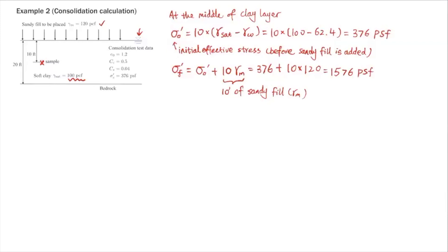To determine the primary consolidation settlement SC, we need to know which case it is. That's where you compare these values to your pre-consolidation pressure. Pre-consolidation pressure SC is 376 PSF. If you compare with these values, you notice that initially the effective stress in the clay layer is the same as its pre-consolidation pressure, which means this is a normally consolidated clay. If you look at the three cases, this is case 1 in our notes. For normally consolidated clay, we're going to use the compression index CC to calculate the settlement.